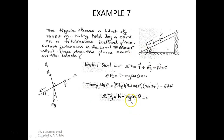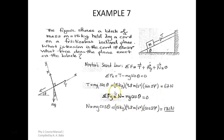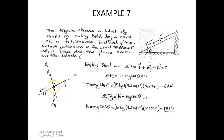Using cos 27 degrees for the vertical component — or equivalently mg sin 63 degrees — we have N minus mg cos theta equals zero. Rearranging gives N equals mg cos theta. With m equals 15 kilograms and g equals 9.8 m/s², N equals 15 times 9.8 times cos 27 degrees, which gives 131 Newtons. This is the force exerted by the plane on the block.